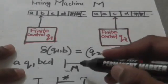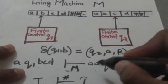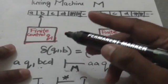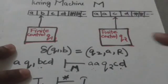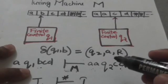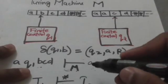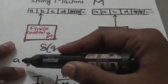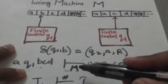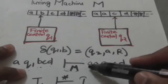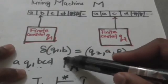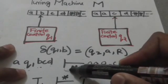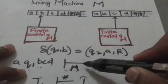Because the Turing machine has reached this configuration from the previous configuration in exactly one move, these two instantaneous descriptions are related by this symbol, where M denotes that we are talking about Turing machine M.